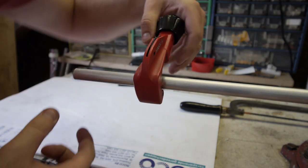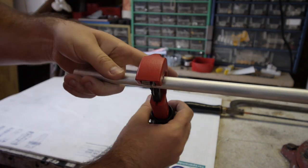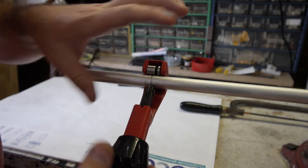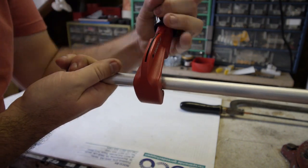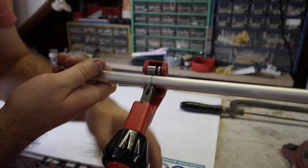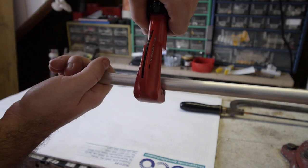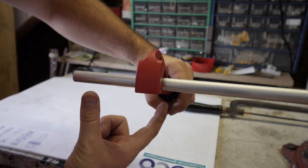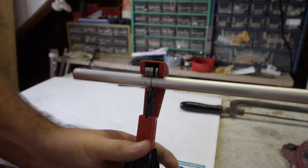and cut the pipe. And just keep on turning the knob here so the knife will go deeper and deeper.